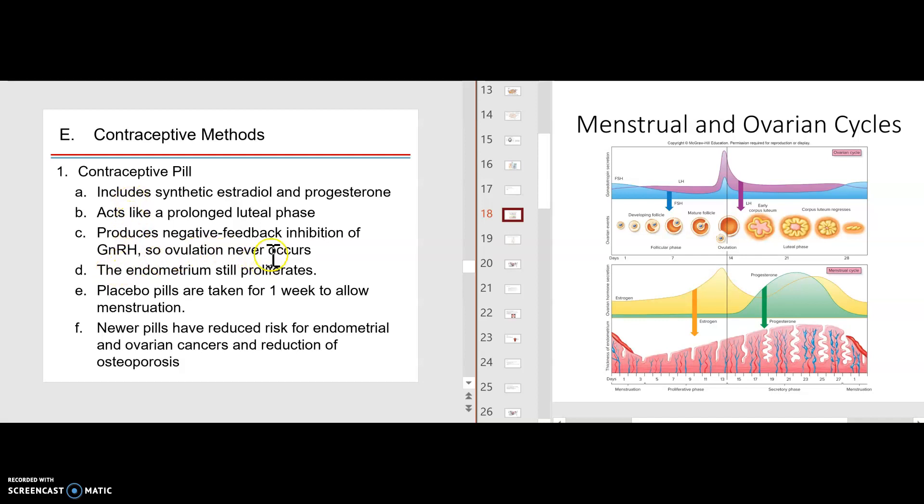The endometrium still proliferates because of the estradiol, and you still have progesterone, which takes you into this luteal phase. And then the birth control pill generally is a 28-day pack, most of the time, with seven placebos. And so the placebos, which means artificial pill, with no estrogen and progesterone, then causes a menstrual period to occur. And the pill, by having a high level of estrogen, the initial pills, which had a higher level of estrogen, would sometimes stimulate endometrial carcinoma. So they've kind of reduced the estrogens and slightly changed them.